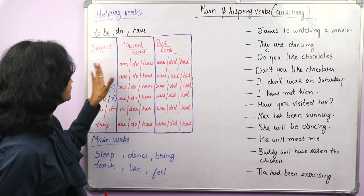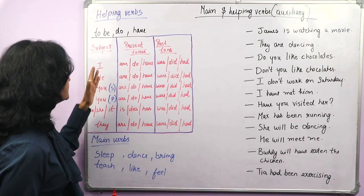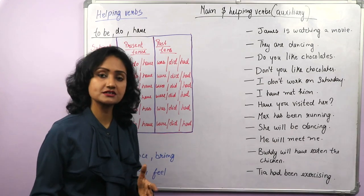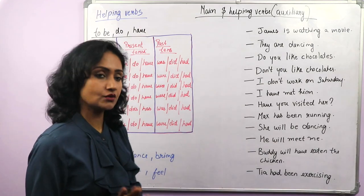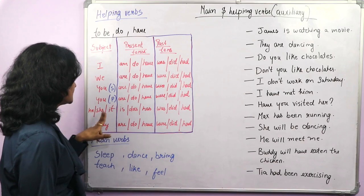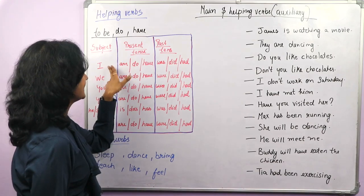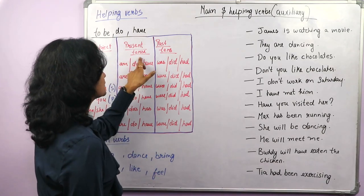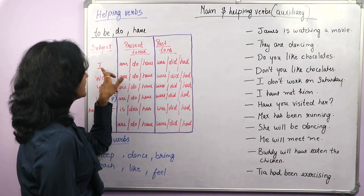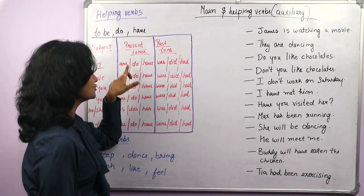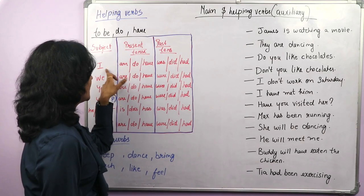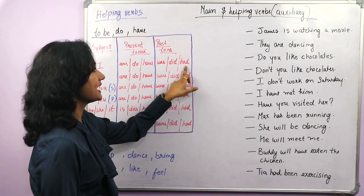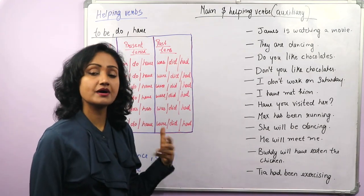Here I have written their usage with different persons — I, we, you, he, she, it, they. With I, the to-be verb is am in present and was in past. For do: I do, I did in past. Then I have and I had — in present it is have, in past it is had. With we: are in present, were in past, we do, we did, we have, we had.